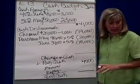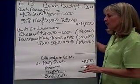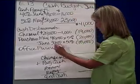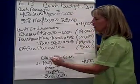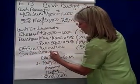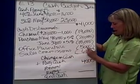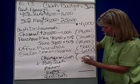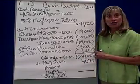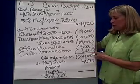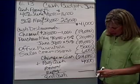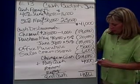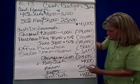Part E talks about other expenses. I'm going to pay $5,000 for office furniture and $6,000 for sales commissions. So if I take my cash receipts and subtract all these cash disbursements, I find that the change in cash is negative $24,000 — in other words, there's more cash going out than coming in. With a beginning cash balance of $4,000 and a required ending balance of at least $4,000, I have to go out and borrow $24,000.